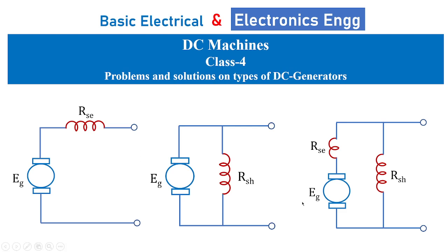Welcome to another session of basic electrical and electronics engineering. In today's class 4 under DC machines, we are going to see some problems and solutions on types of DC generators. Here you can see different types of self-excited DC generators: shunt generator and compound generator. These are the types of DC generators under self-excitation. If the excitation is from an external source, that particular type of DC generator is regarded as a separately excited DC generator.